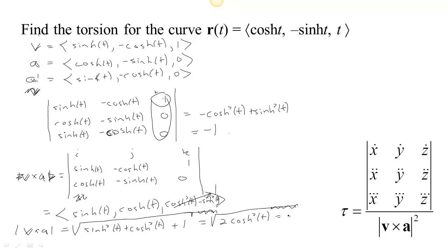Now the cosh, yeah, so let's see. The cosh is always, this is the absolute value of cosh, but cosh is always positive. So that's the length of V cross A. So put that all together, and we find that the torsion is -1 over 2 times cosh²t for this curve.